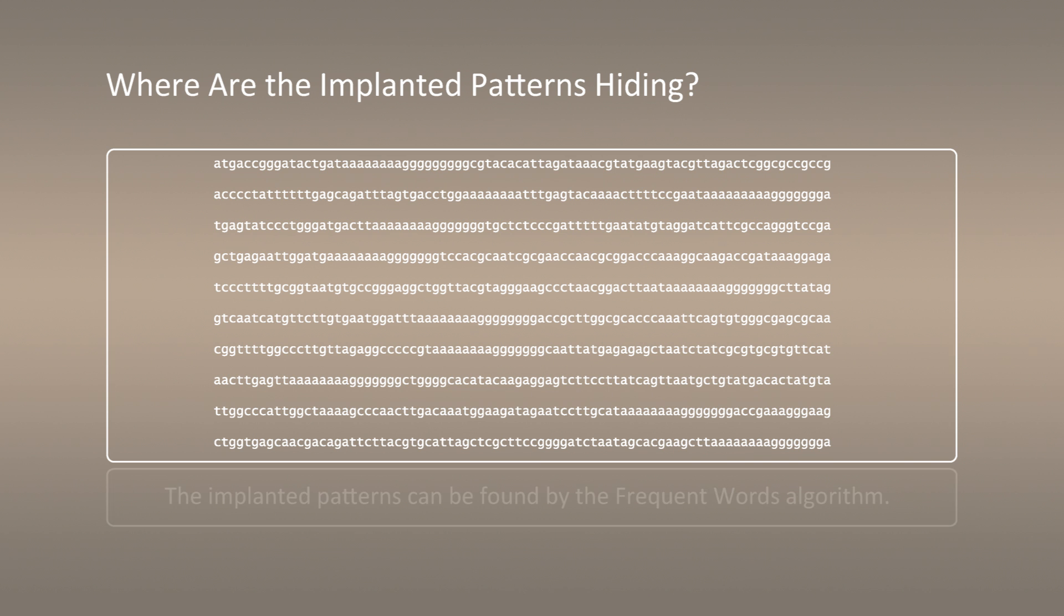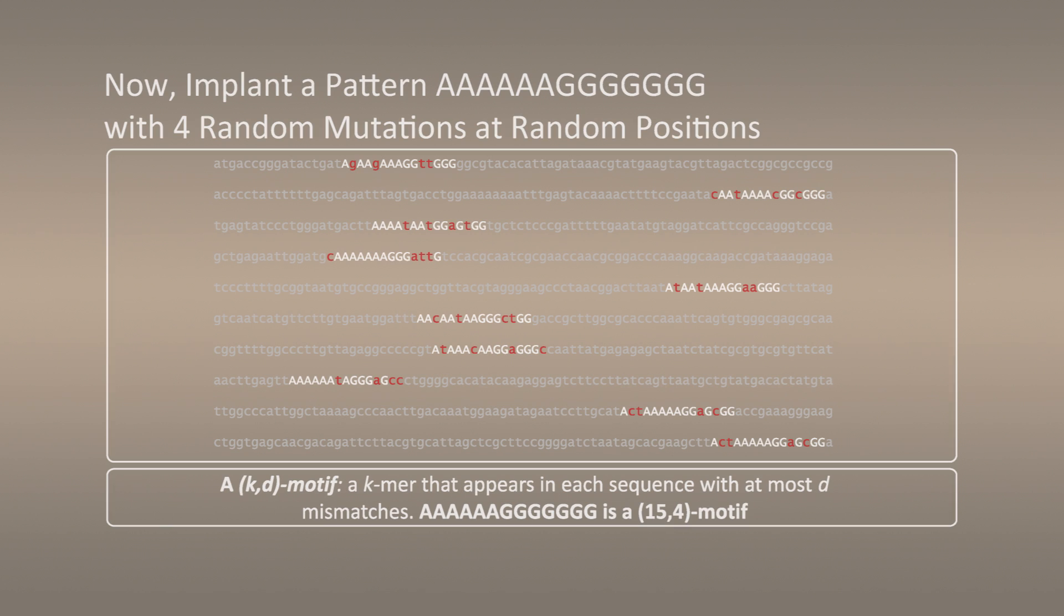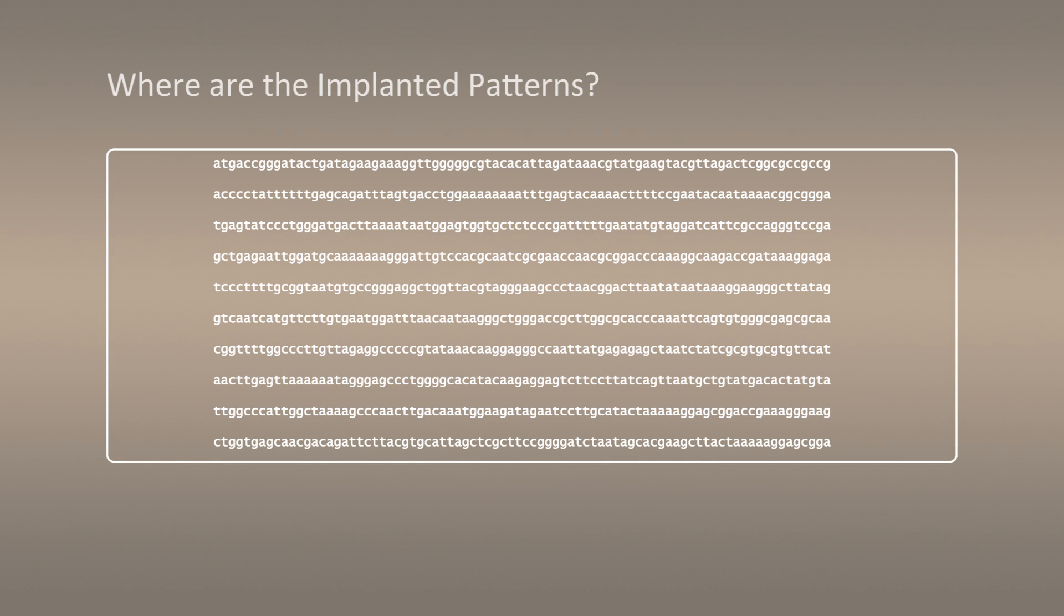Let me change the experiment slightly. Now, instead of implanting the patterns without any changes, I will insert the same 15 nucleotide long pattern with 4 random mutations at random positions. In this case, this pattern forms so-called K-D motifs, which is a K-mer that appears in every sequence with at most D mutations. Can you find such a pattern if I hide from you where I inserted it?